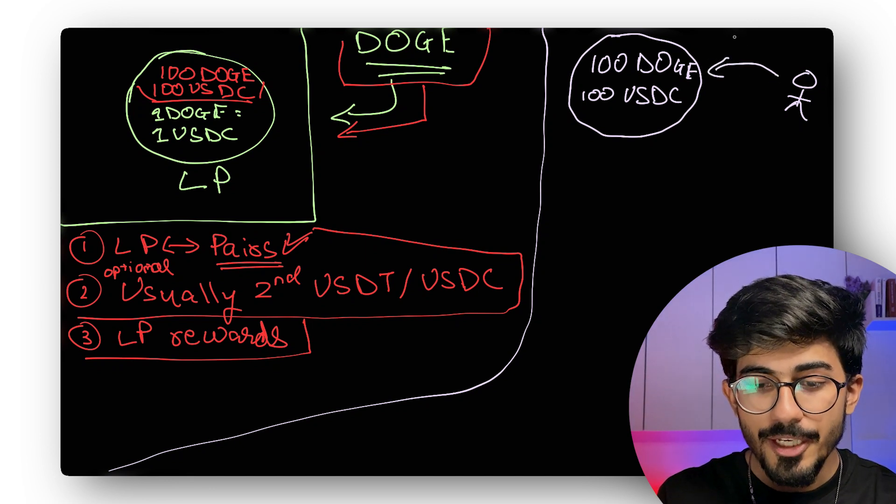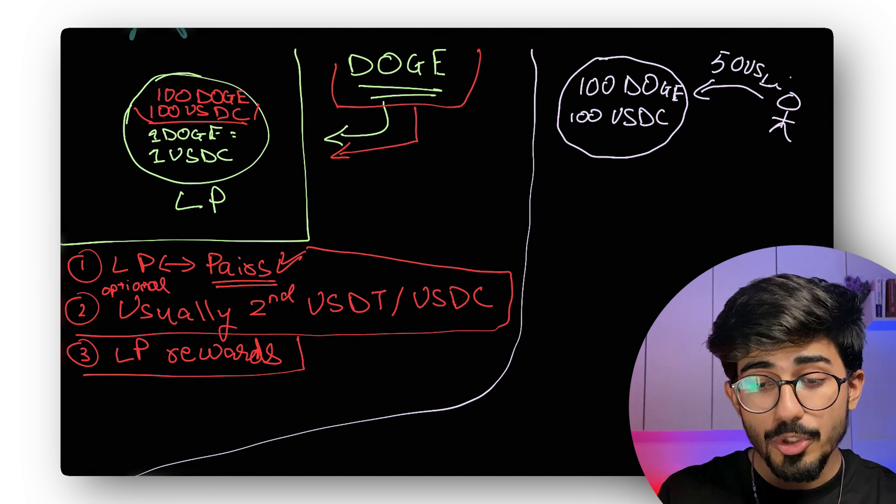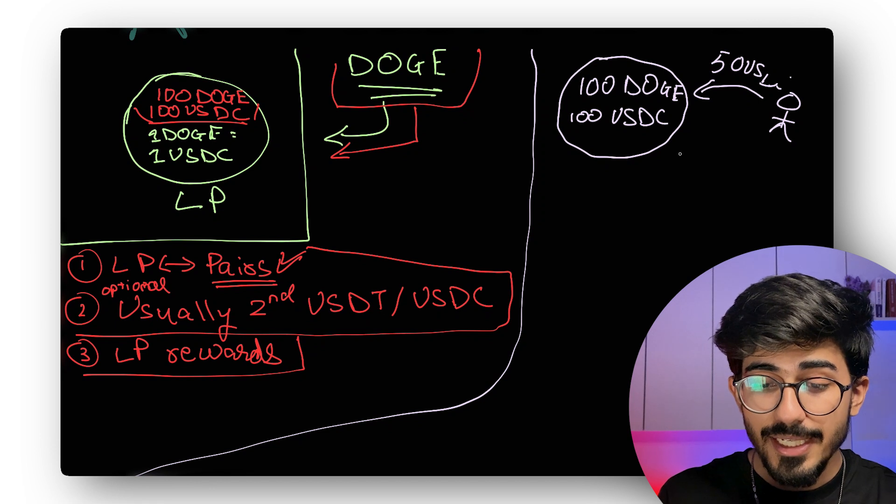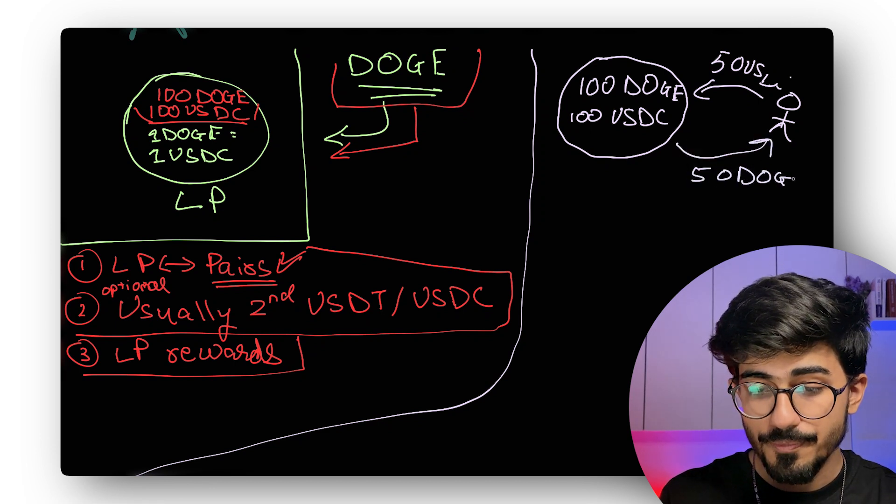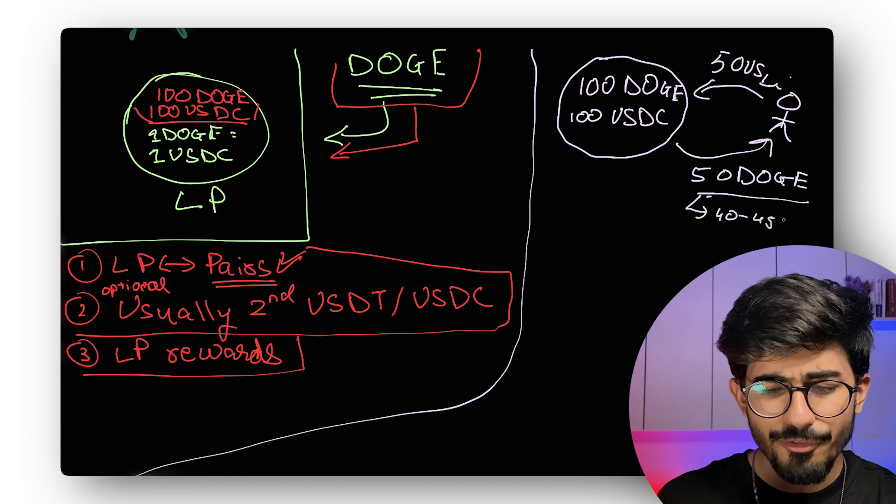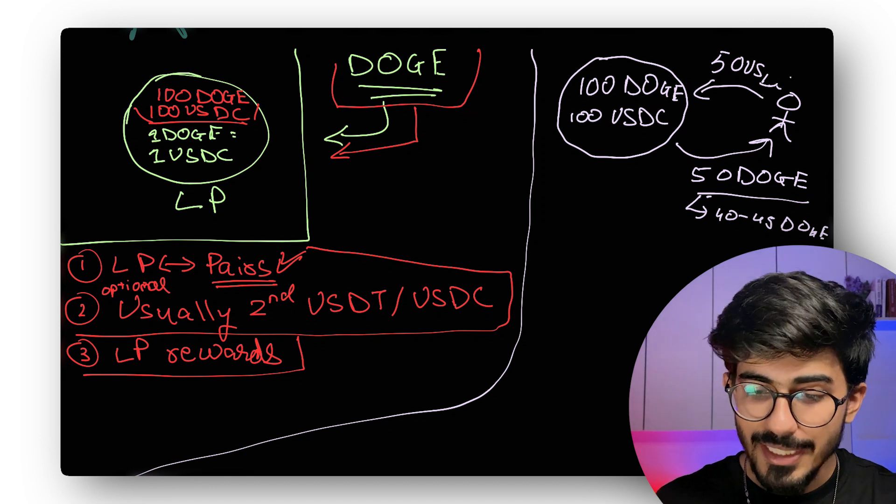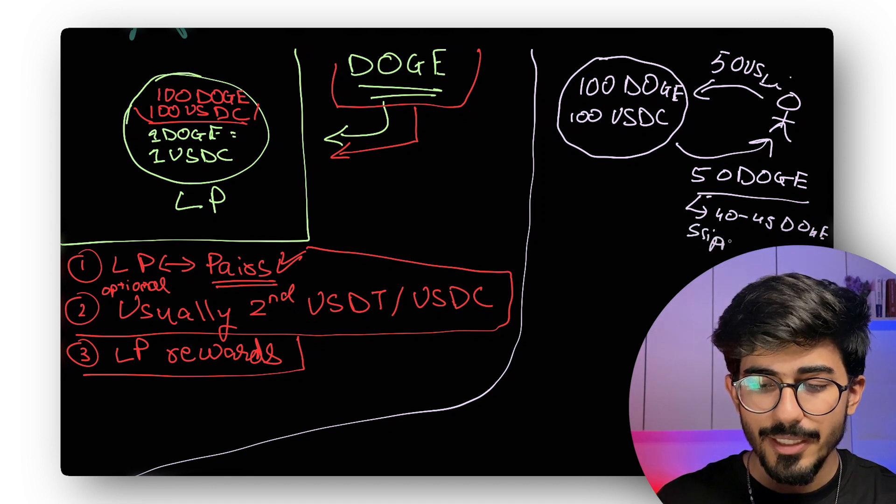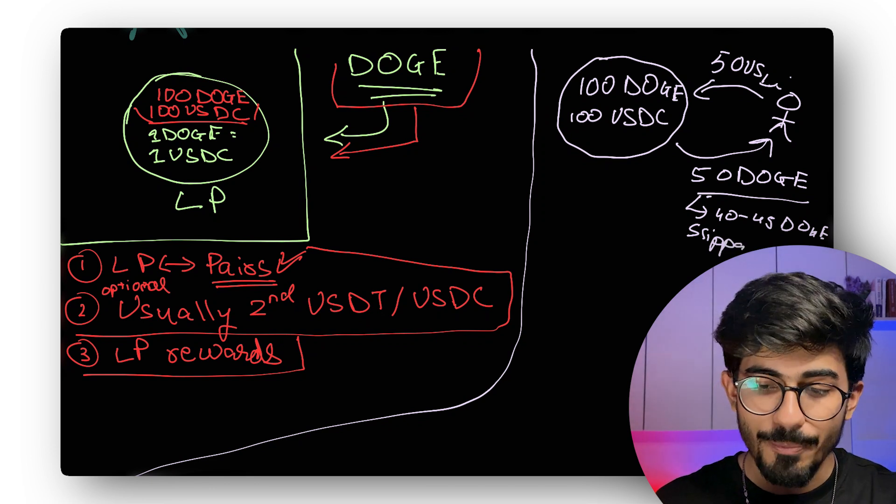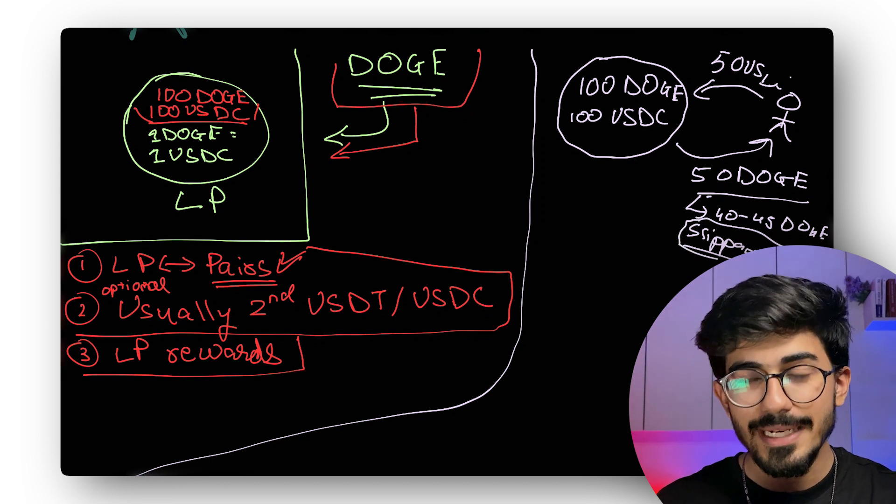So he's ready to put in 50 USDC. Of course, because one Doge is equal to one USDC, he'd be getting back 50 Doge tokens, 40 or 45 Doge tokens. And this actually happens because of a lot of fees plus slippage. So slippage is nothing but slipping off the prices of cryptocurrencies. Now, in order to understand it, we'll deep dive into it later.